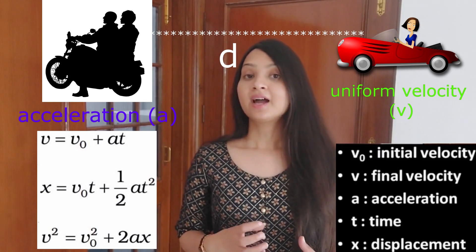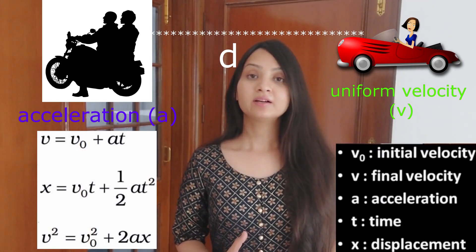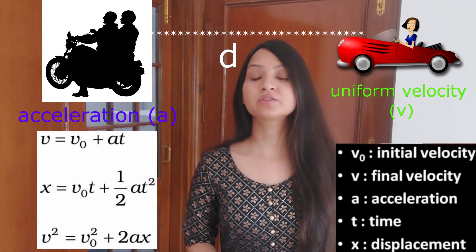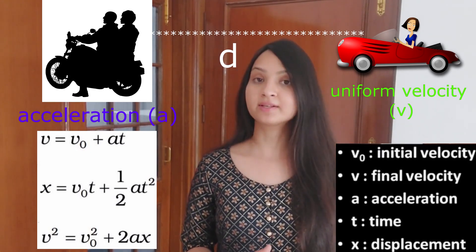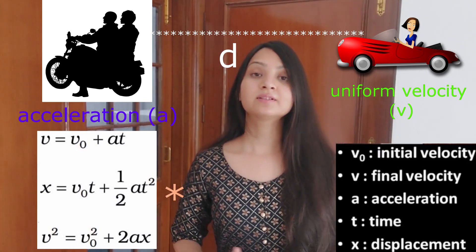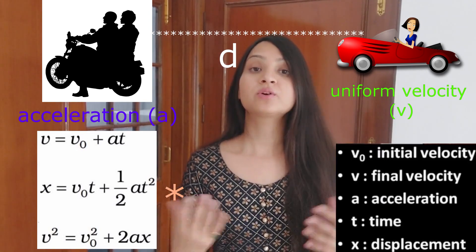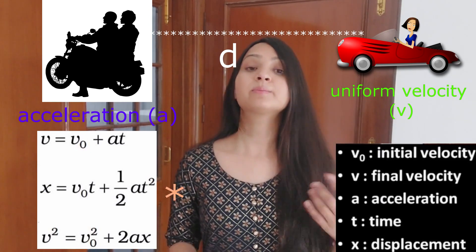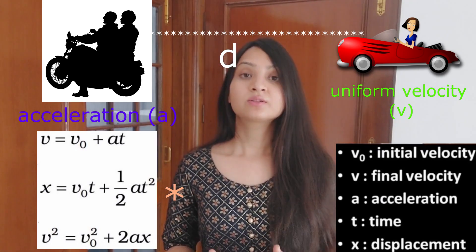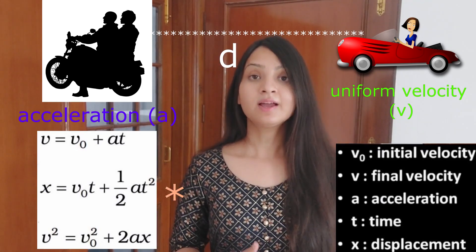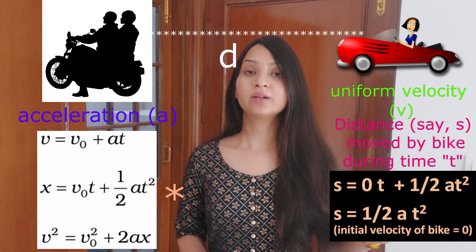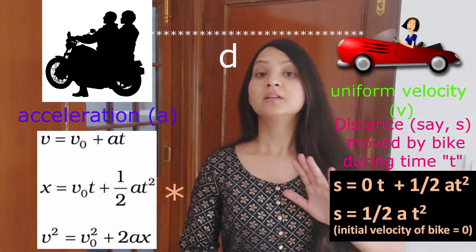In time t, the distance that the bike travels is calculated using one of the kinematic equations of rectilinear motion — straight-line motion with constant acceleration. We choose the appropriate equation based on what is given and what has to be found, giving us the distance the bike moves in time t.